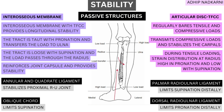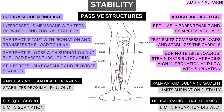Now let's look at the articular disc, also known as the triangular fibrocartilaginous complex — the TFCC. This structure regularly bears tensile, or distraction, forces and compressive loads. It transmits compressive loads at the wrist joint and stabilizes the carpal bones between the hand and forearm. It also takes tensile loads, and does so predominantly in pronation compared to supination. The strain distribution is very high with pronation and very low during supination, so the TFCC provides much more resistance to distraction forces when the forearm is pronated.